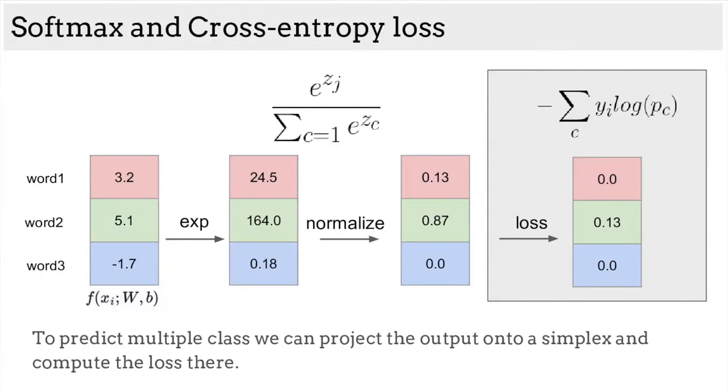Now, applying a cross-entropy loss, we can compute the sum of the true class times the log of the prediction. Here, yi is 1 in only one place, so it is simply the natural log of one specific output probability that is negated. Our goal will be to minimize this term, which will, in effect, maximize the probability 0.87, which, in turn, will minimize the other outputs due to the softmax.